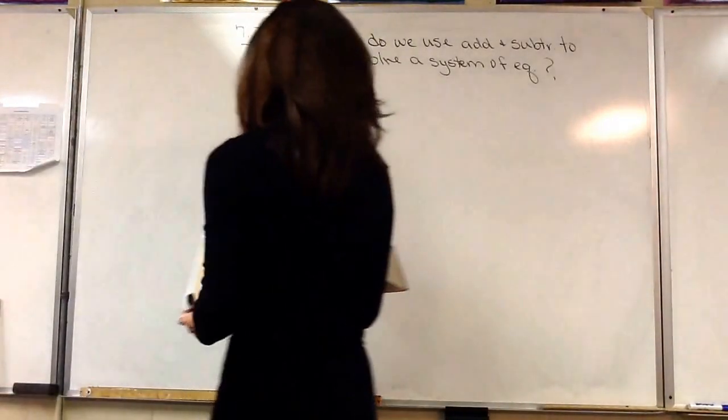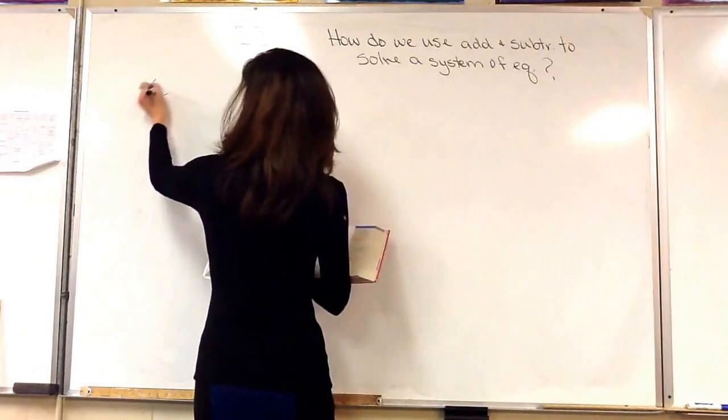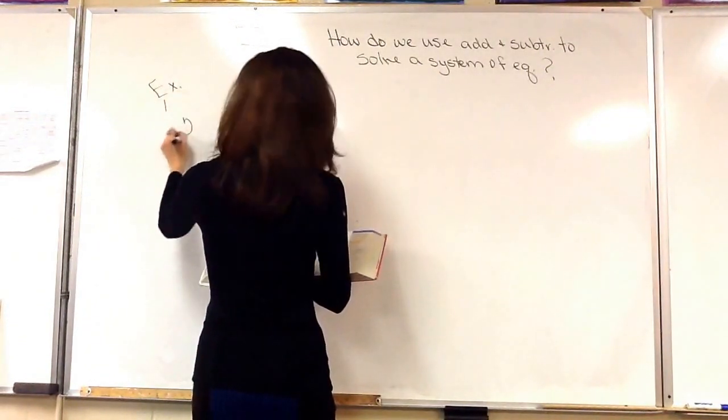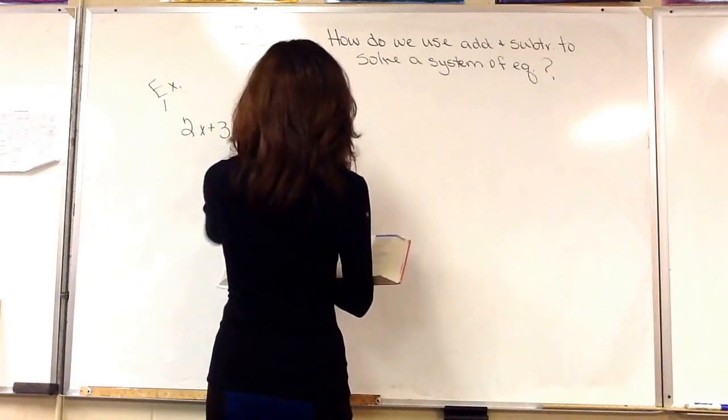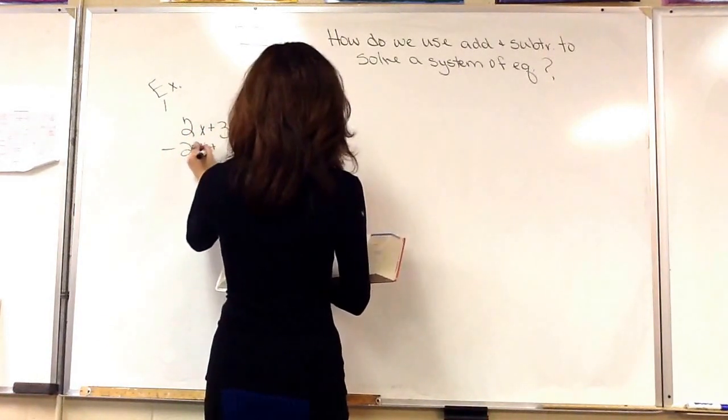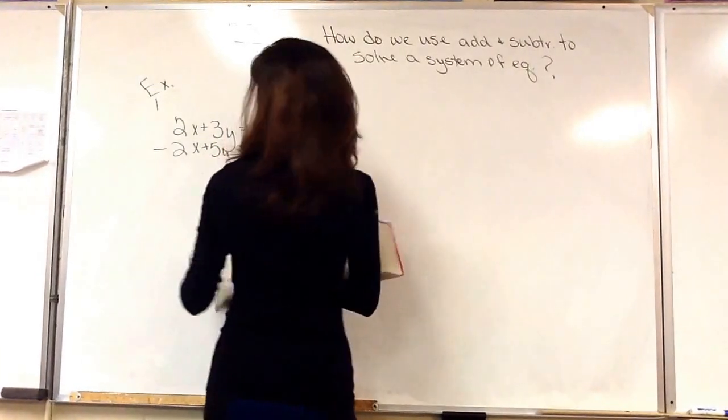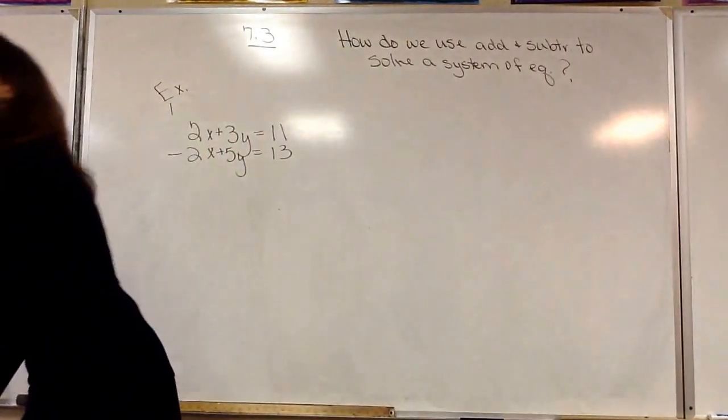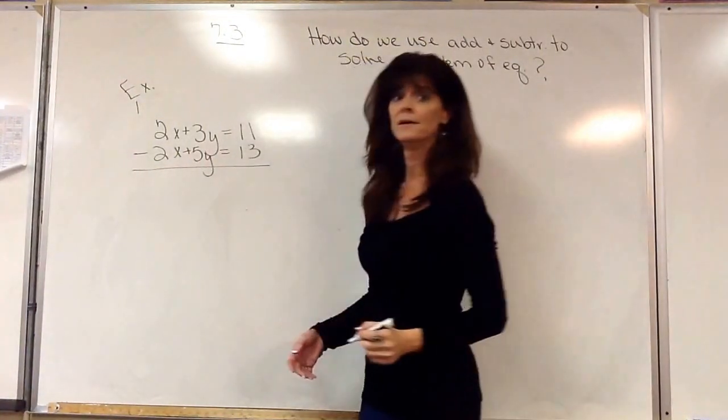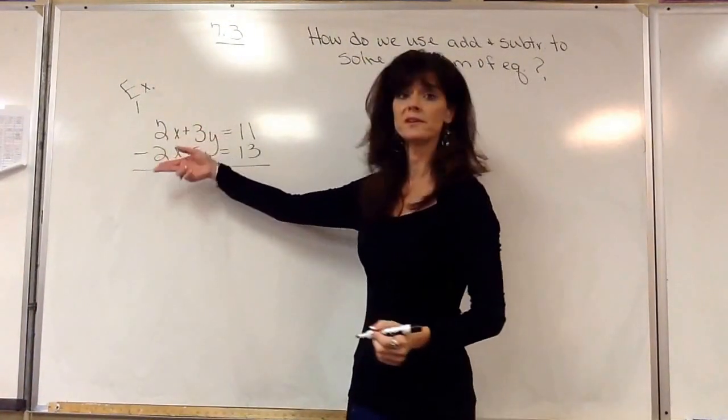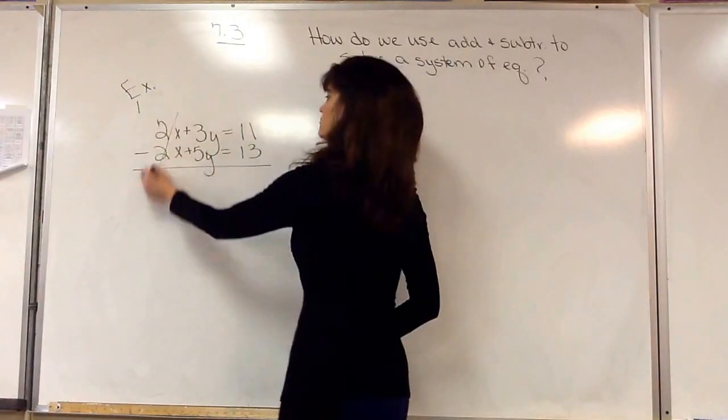In example one I have two equations. We have 2x plus 3y equals 11 and negative 2x plus 5y equals 13. All I'm going to do with this one is we're just going to draw a line. Notice how we have a positive 2x and a negative 2x? We're just going to cancel it.